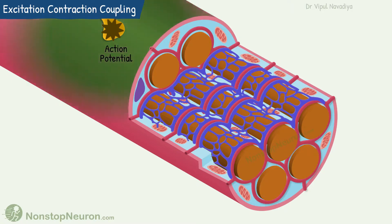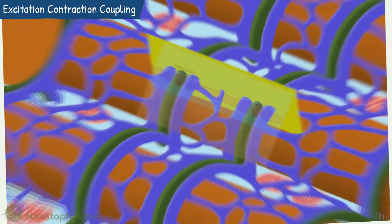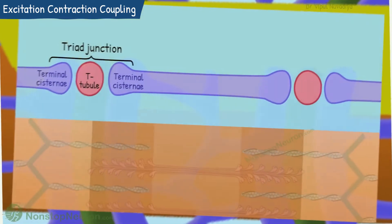The action potential spreads along the membrane. Along T-tubules, it penetrates deeper into the muscle cell. Now let's go to the triad junction where the next magic happens.